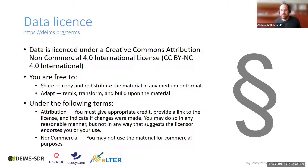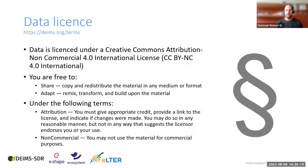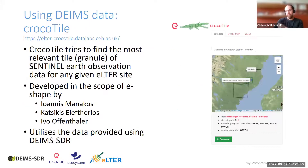Regarding data licensing: data on DEIMS is open and described in detail on the website. It's licensed under CC BY-NC 4.0, meaning you can take, work with, share, adapt, change, and modify the information. The only requirements are that you cite it and don't sell it. For scientific purposes, take the data, work with it using the APIs or Python package, add your own analysis, publish a paper, and simply cite the service.